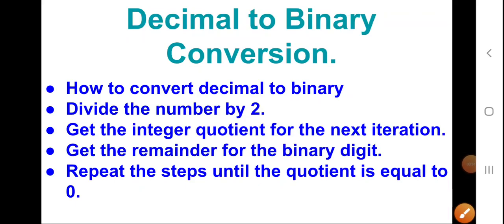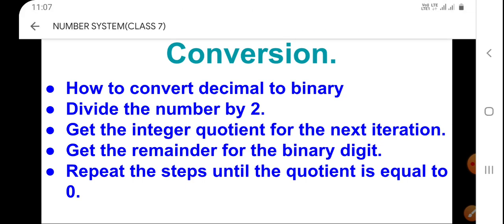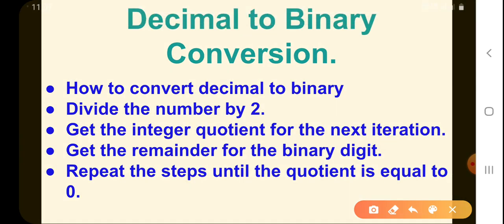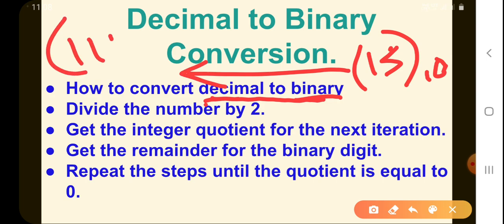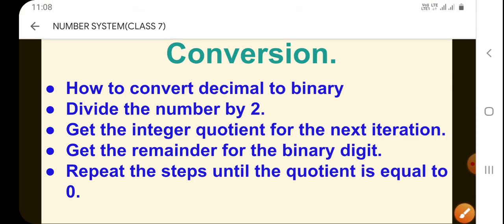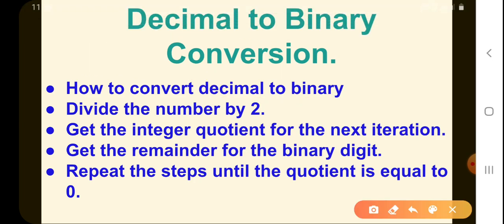Welcome back, dear students. Today we are going to study decimal to binary conversion. You have already studied the decimal number system and the binary number system. So let's see how to convert a decimal number — for example 15, whose base is 10 — to a binary number whose base is 2.